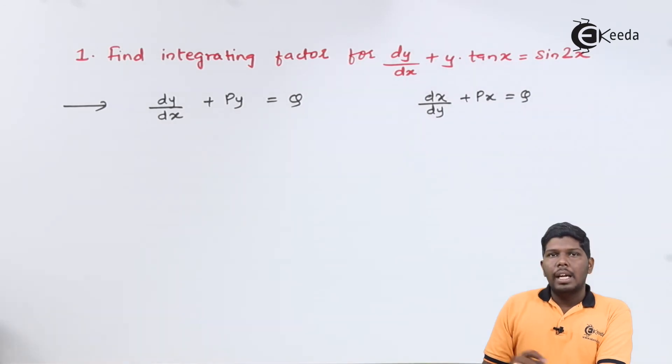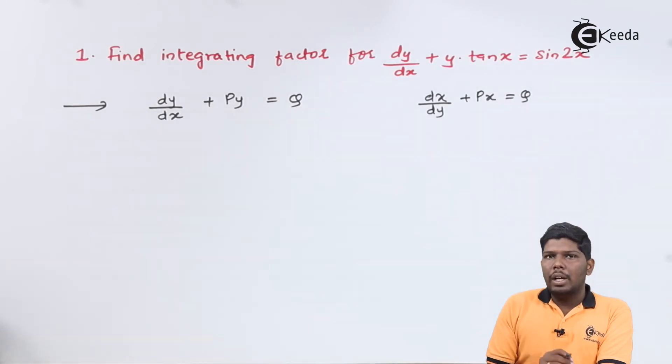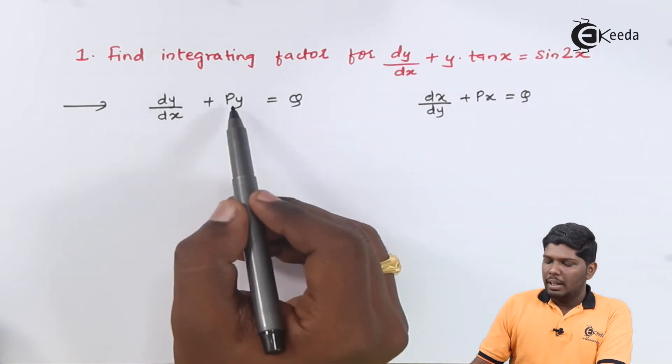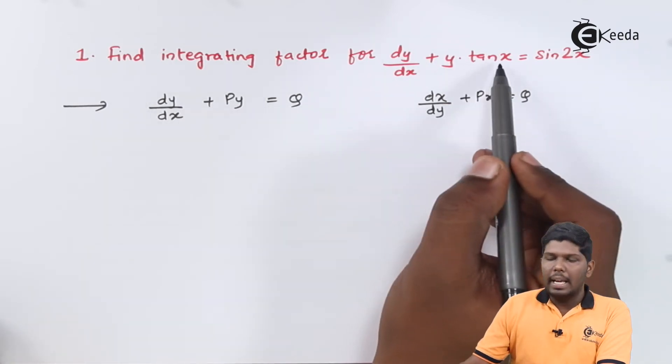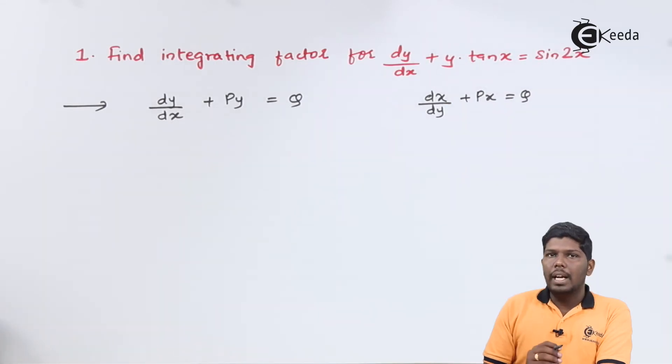As you can see, our problem is present in the form of dy/dx, so you can compare this with the first equation to get the values of P and Q. If I compare this, we will say the value of P, that is the coefficient of y, will be tan(x), and on the right-hand side, the constant Q is sin(2x).